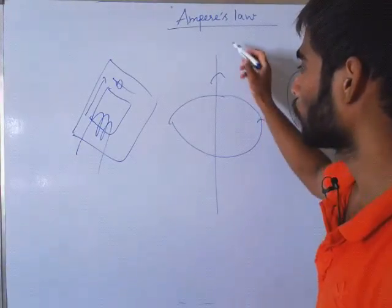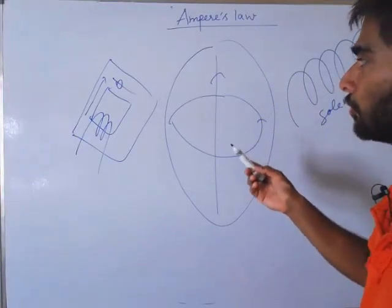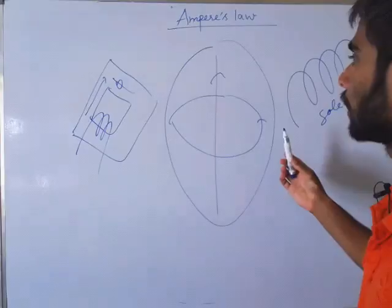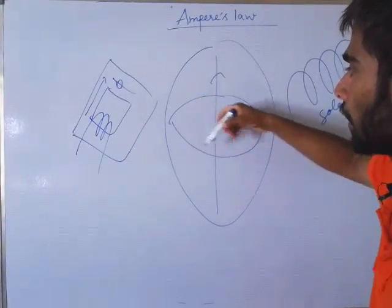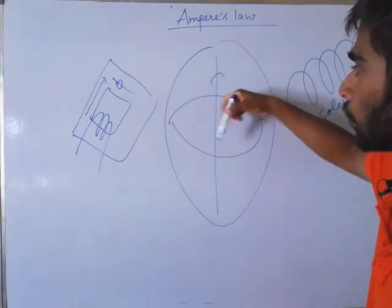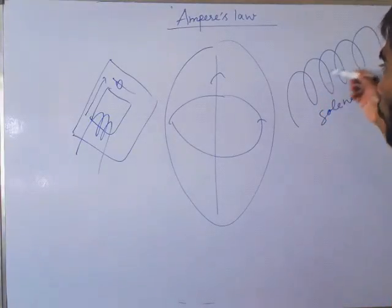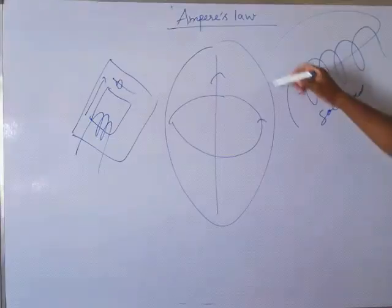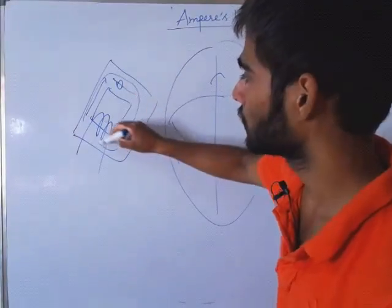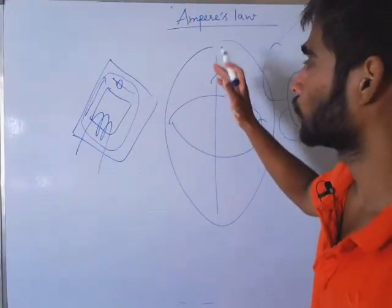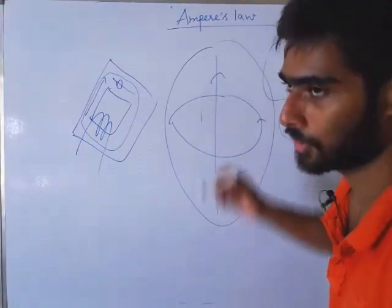So I will start with this configuration, the simplest one. Actually all are simple, but we need to have a good idea about the magnetic field configuration. As we know that the straight conductor has a magnetic field concentric around the conductor. Likewise we must be knowing the configuration of the solenoid windings. This is like this, and like this, and in transformer case it is like this. So this much information is needed to use the Ampere's law. So let us start from this configuration only.